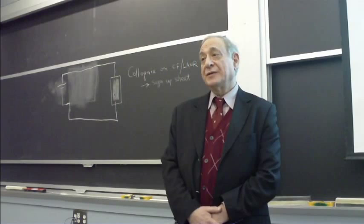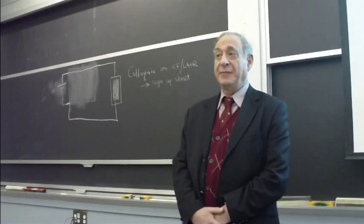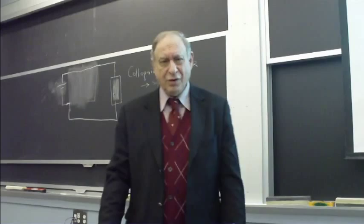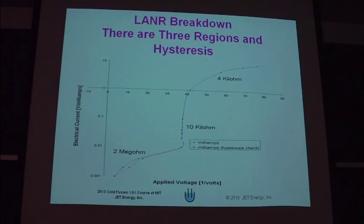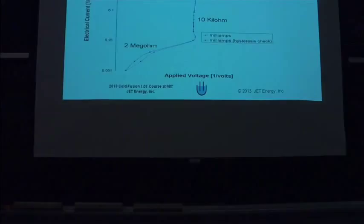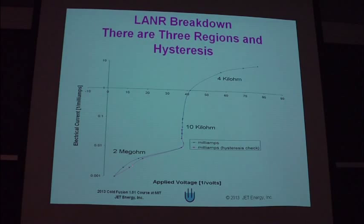We were able to expand on the equations to try and analyze it maybe a bit better. Is that reversible once you get past that? Good question. There are three regions and there is hysteresis. Here we go up to two megaohms, 10 kilohms, 4 kilohms — we come back and there is slight hysteresis but it is reversible over time.